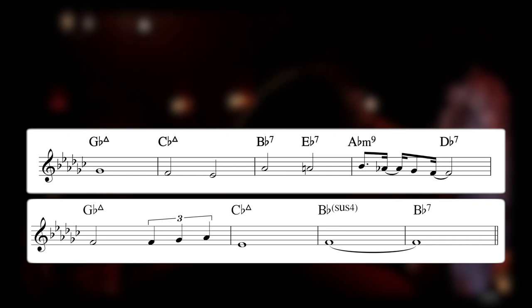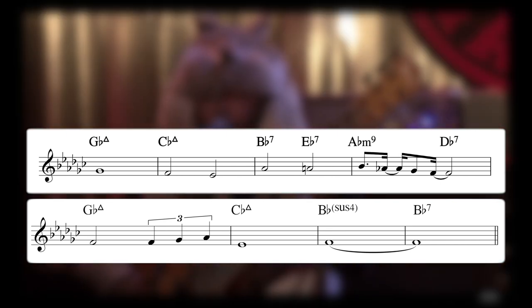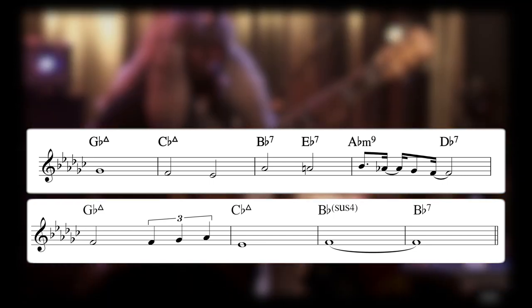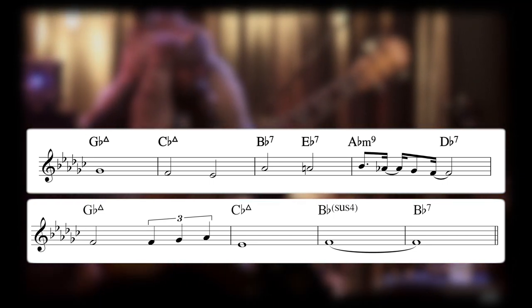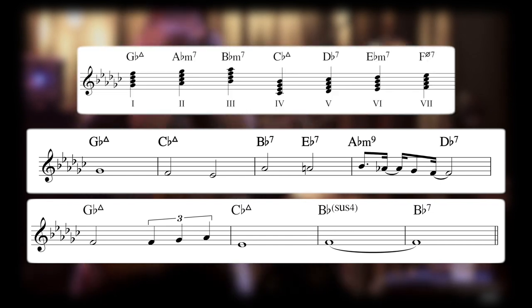The interlude is quite a different contrast to the verse. Thundercat lets go of the drum beat and we enter into a world of very straight ahead jazz-like harmony and melody. Here we enter relative major key, the G flat major.